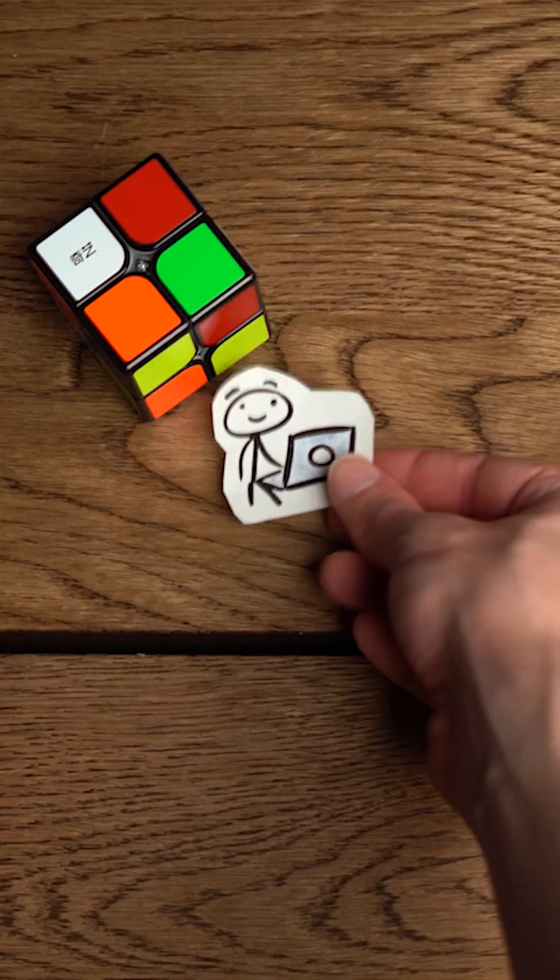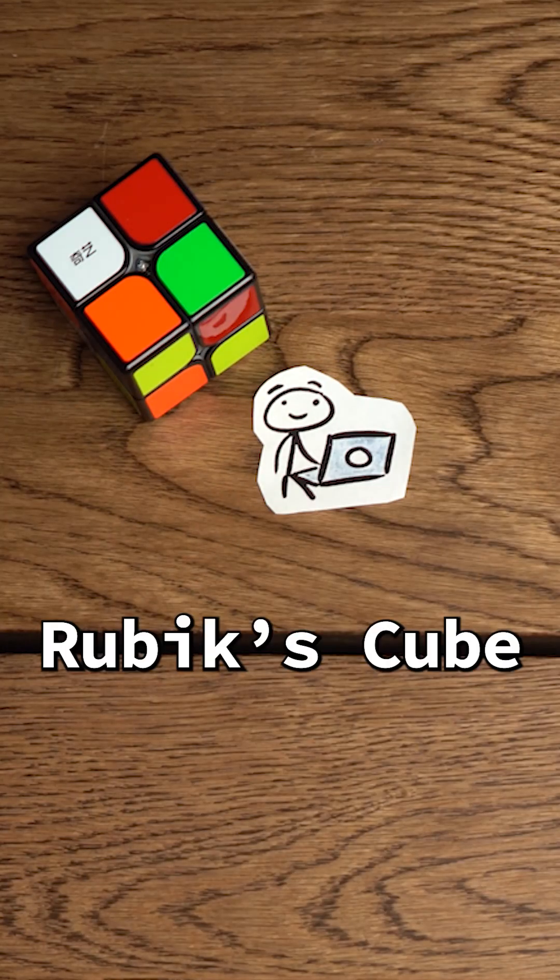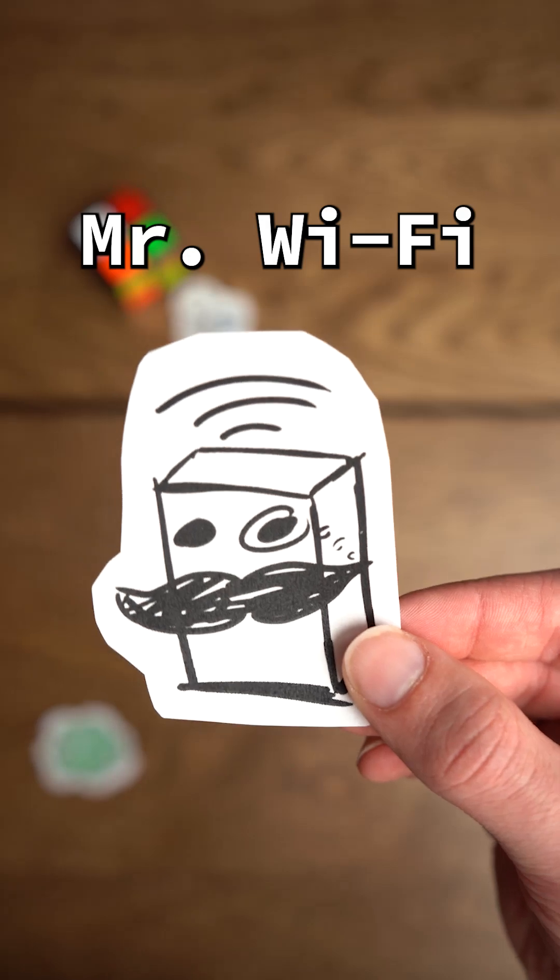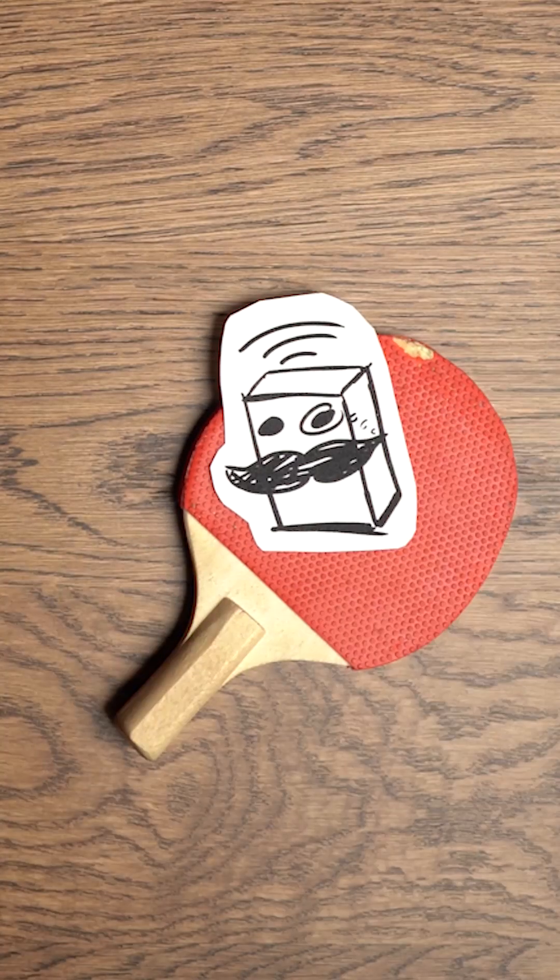This is Steve. Steve's just minding his business over here by this Rubik's Cube. Now this is Mr. Wi-Fi, the router that Steve's laptop is connected to.